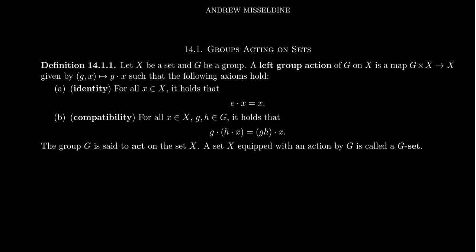A left group action from the group G onto X is, in fact, a map, a function of the form G cross X towards X. The domain is the Cartesian product of the group G and the set X, and the codomain is the set X.